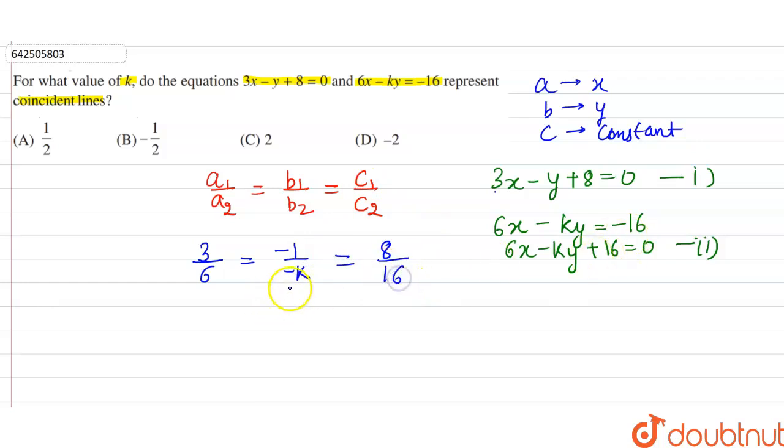So we can say that the negatives cancel. So 3 by 6 will equal 1 by k. When we cross multiply, this gives 3k equals 6. So k equals 6 divided by 3, which equals 2. So the correct option is option c.